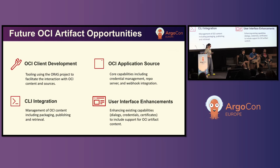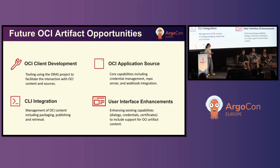Most people, when they want to ship a change, don't think about shipping a manifest — they think about shipping a binary. They say: I built it, CI ran it, it tested and pushed to the repo, after that it should get deployed. They don't necessarily think about the GitOps side — like versioning manifests for rollbacks — and probably shouldn't have to, because ultimately they just want to get it deployed.